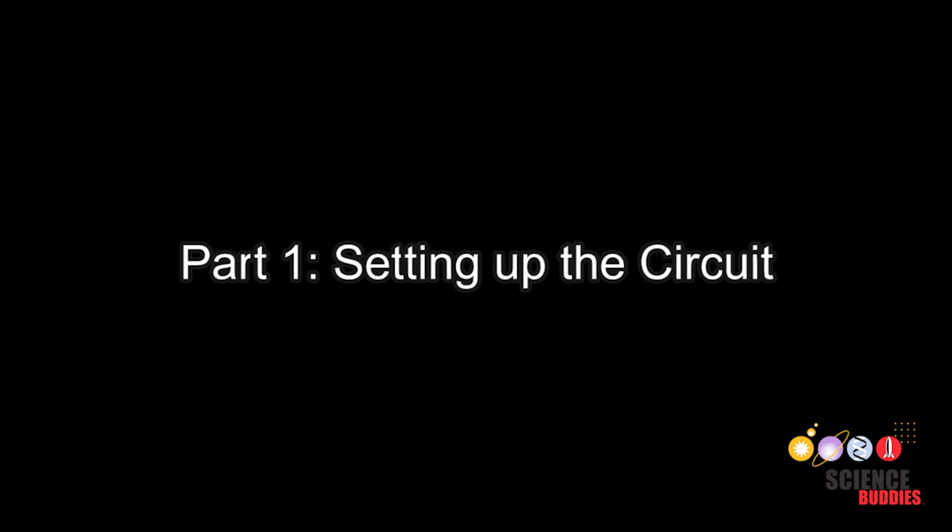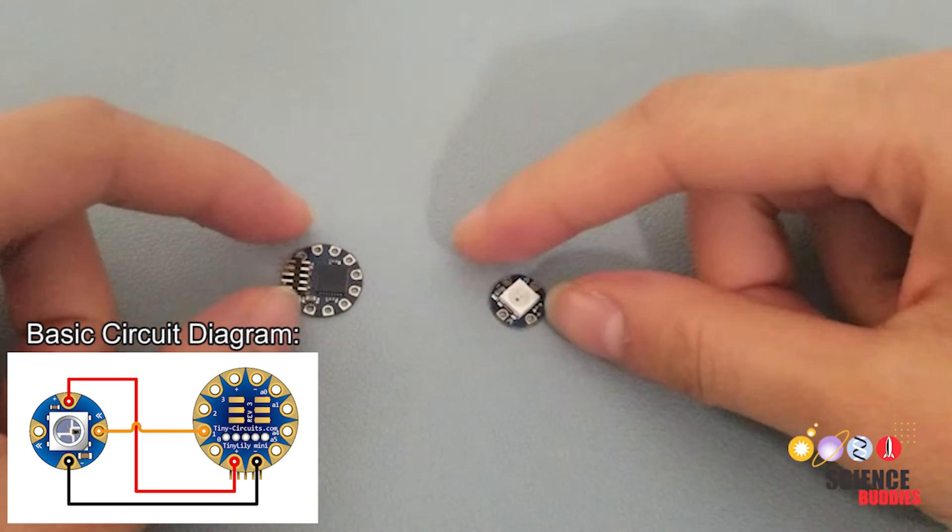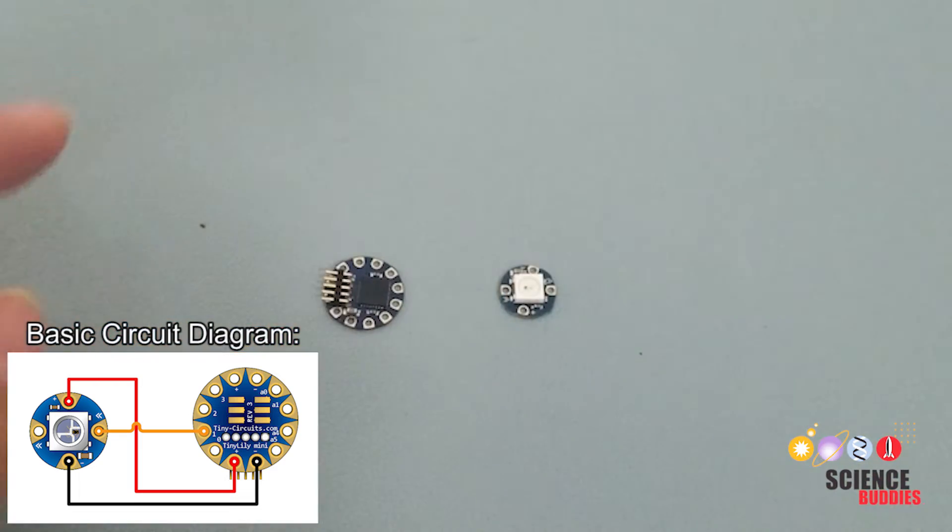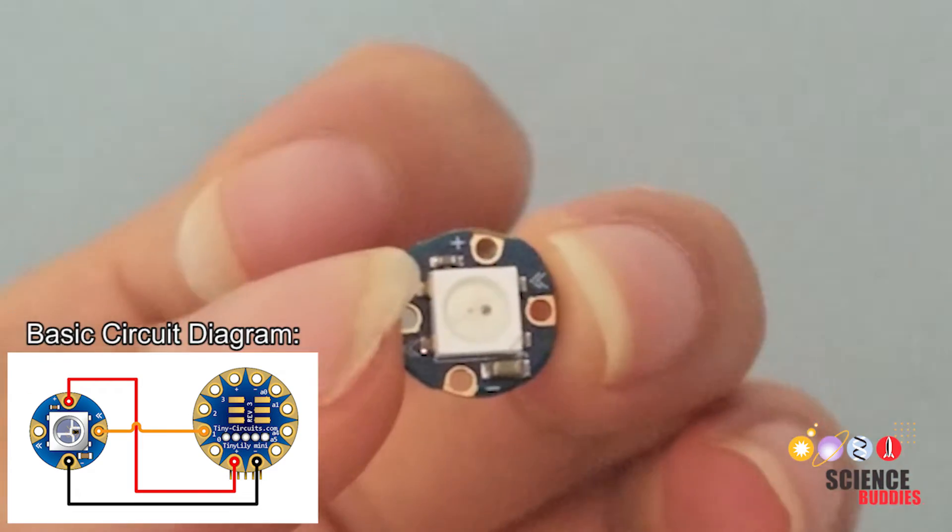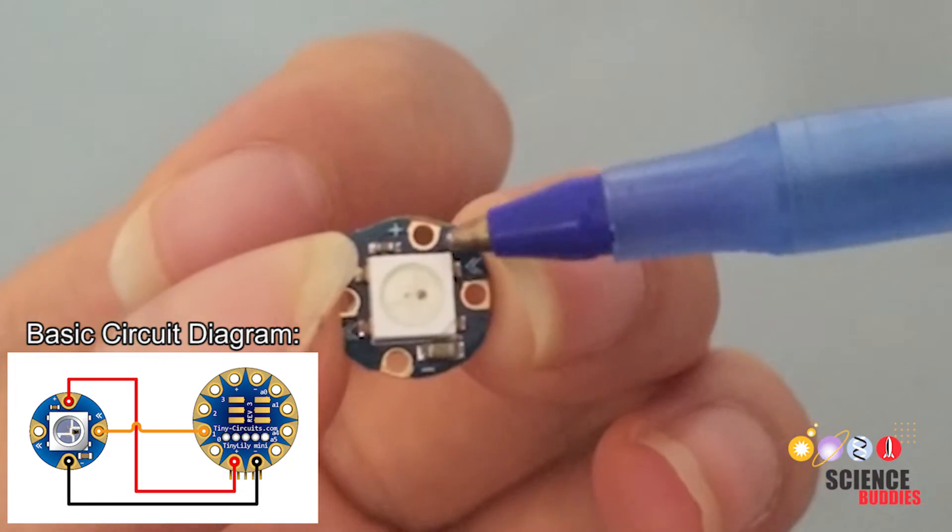Part 1, Setting Up the Circuit. First, let's build your circuit. Connect your RGB LED to your TinyLily mini processor. The positive pin should go to the positive pin on the LED board, which is represented by a plus sign.